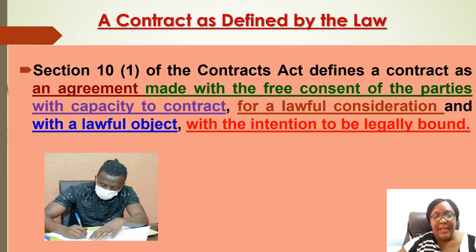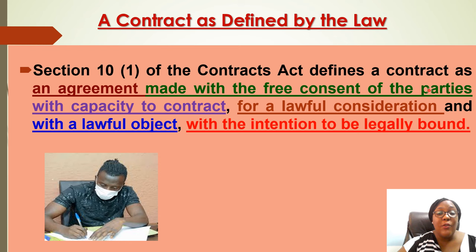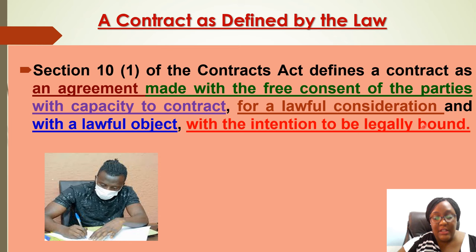Section 10 of the Contract Act gives the actual legal ingredients of a contract. It says a contract is an agreement — that's one ingredient — made with the free consent of the parties — another ingredient — who have the capacity to contract, contracting for a lawful consideration with a lawful object (i.e., no illegality), and with an intention that they should be legally bound. This is how the law defines a contract.